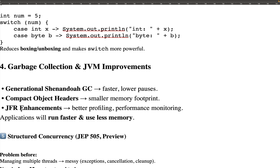Also part of JVM improvements is JFR — Java Flight Recorder — which was introduced in earlier versions like Java 14 or 17. Similar to Spring Boot Actuators for monitoring, JFR records and analyzes your Java application's performance. For example, if a Java application running on Linux is not performing well, JFR helps profile it, identify the issue, and you can then adjust memory. It enables better profiling so applications run faster and use less memory.